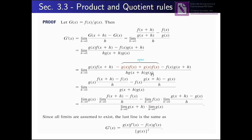Between the remaining terms, we take f(x) as a common factor, leaving g(x+h) minus g(x). Taking minus f(x) as the common factor gives minus g(x) from one term and g(x+h) from the other. This gives us g(x+h) minus g(x) divided by h, all divided by g(x+h)·g(x), which is the structure we need to apply limit definitions.